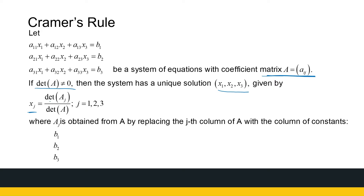X1 is the determinant of the matrix A1 divided by the determinant of A — that makes sense that the determinant of A must be non-zero. A1 is the matrix I get if I substitute the first column with the values on the right-hand side, B1 to B3, in matrix A.